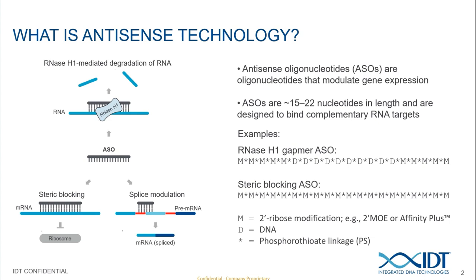RNaseH1 gapmer antisense oligos are chemically modified to enhance nuclease resistance as well as to increase binding affinity, but they still have a DNA domain which serves as a substrate for RNaseH1 recognition, resulting in cleaving the target RNA. Steric-blocking antisense oligos, on the other hand, are chemically modified all the way through and are not substrates for RNaseH1. Instead, they are designed to block biomolecules — for example, the ribosome to inhibit translation, or to block the splicing machinery to alter splicing outcomes.